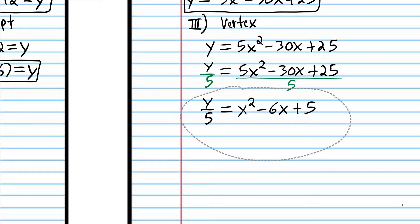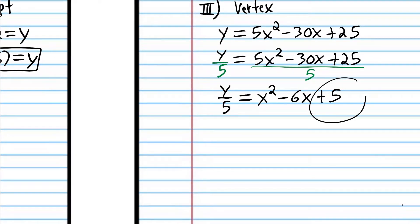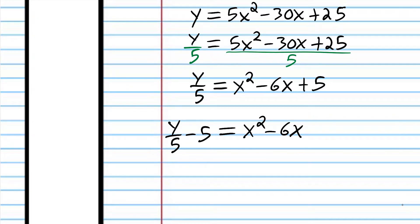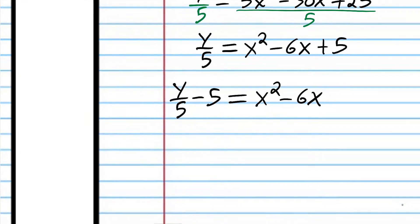Now we've gotten rid of the coefficient of x squared. I'm going to take that 5 and put it on the other side to prepare for completing the square. There are different ways to do this — sometimes people don't move the constant to the other side, but I think it's easier to understand this way based on what we've done in previous classes. Now we're ready to complete the square.